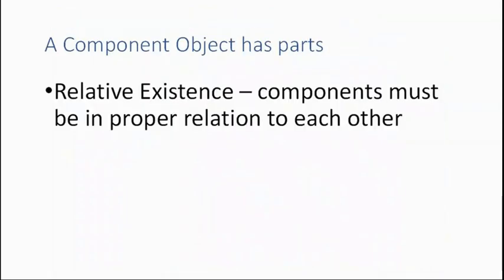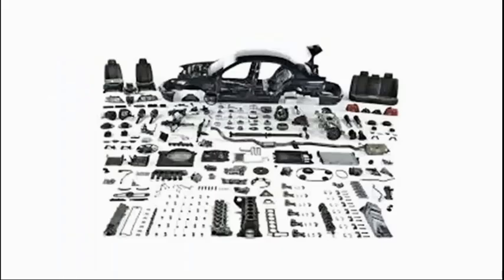A component object requires more than parts to be what it is. It requires that those parts have the proper relation to each other. So if a car were completely disassembled, every screw, nut and bolt, every individual part was put in a pile, that pile is not a car. It has the components of the car but the components aren't in the proper relationship to each other.